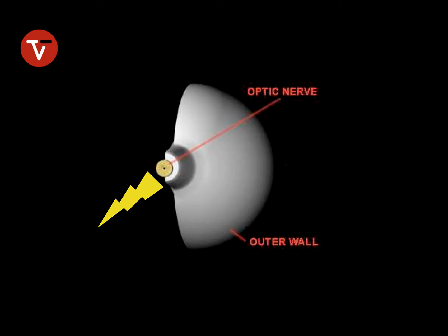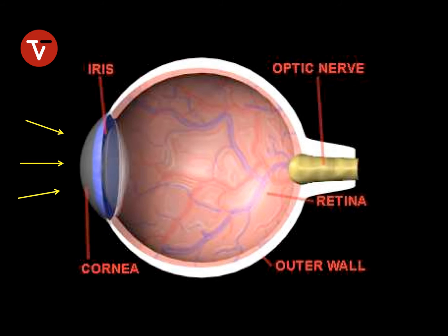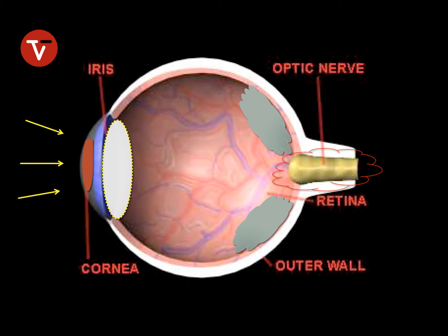The brain pieces all the information together, resulting in the picture or object that we see. Now if there's any obstruction to the entrance of light through the eye — whether there's clouding in the cornea, clouding of the fluid in the front chamber, or clouding in the lens as in the case of a cataract — light won't be able to penetrate those structures and stimulate the retina in the fashion needed for vision to occur. We can also see diseases or disorders of the retina and the optic nerve that can result in loss of vision, as well as conditions affecting the brain.